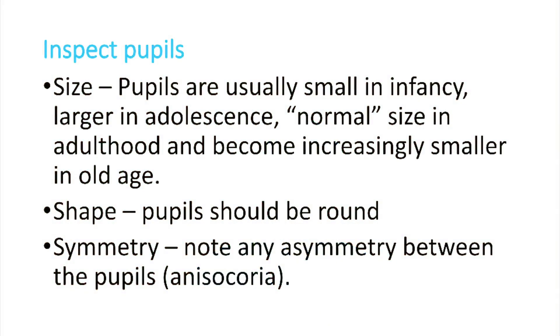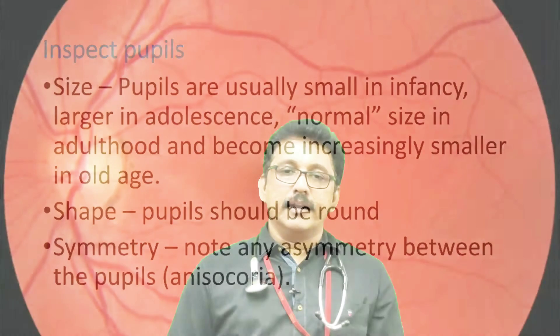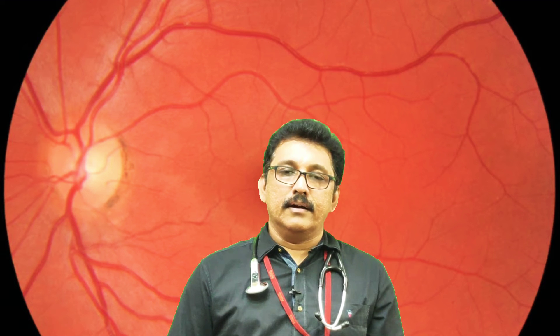When you look at the eyes, the first thing you observe is the pupil. First, look at the size of the pupil — in infancy it may be small, in adolescence it increases, and in old age it becomes smaller again. Next, look at the shape of the pupil; normally it is round, but some conditions may alter the size and shape. Then look at the symmetry — the pupils of both eyes should be equal.